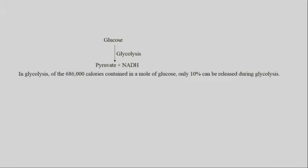First of all, glucose will be converted to pyruvate and NADH in the cytoplasm by the process of glycolysis. In glycolysis, of the 686 thousand calories contained in a mole of glucose, only 10% can be released during glycolysis.